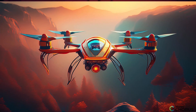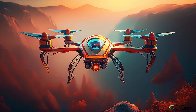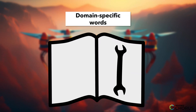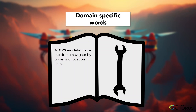Finally, let's tackle a more complex example: deciphering domain-specific words in a technical manual for a drone. You might come across terms like GPS module and gyroscope. A GPS module helps the drone navigate by providing location data. A gyroscope helps keep the drone stable in flight. Understanding these terms ensures you can operate the drone correctly and troubleshoot any issues effectively.